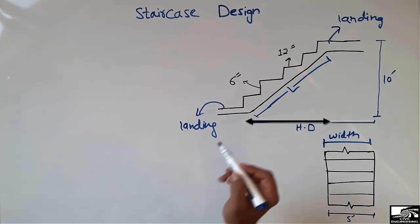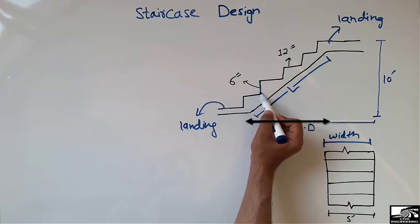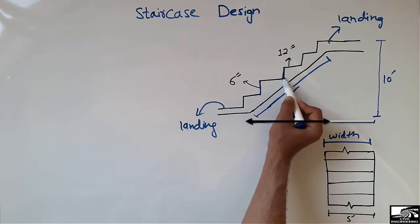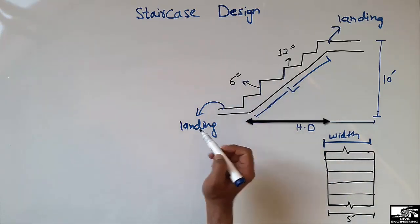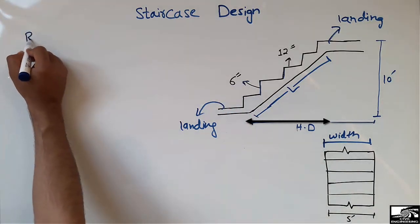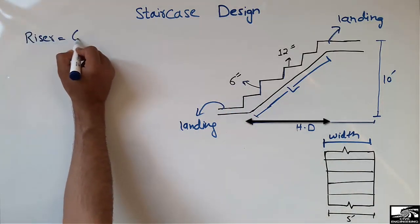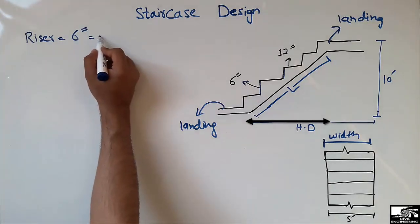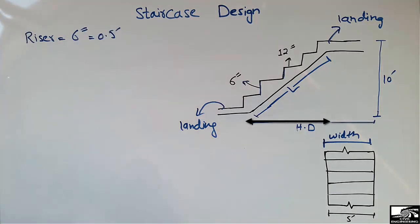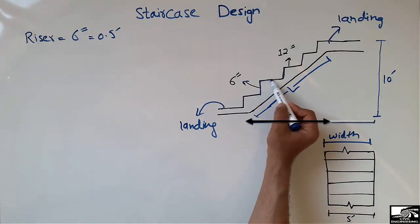This is known as the riser — the vertical distance of each step. This is known as the riser, which is given here as 6 inches. So the riser in this case is equal to 6 inches, or 0.5 feet.